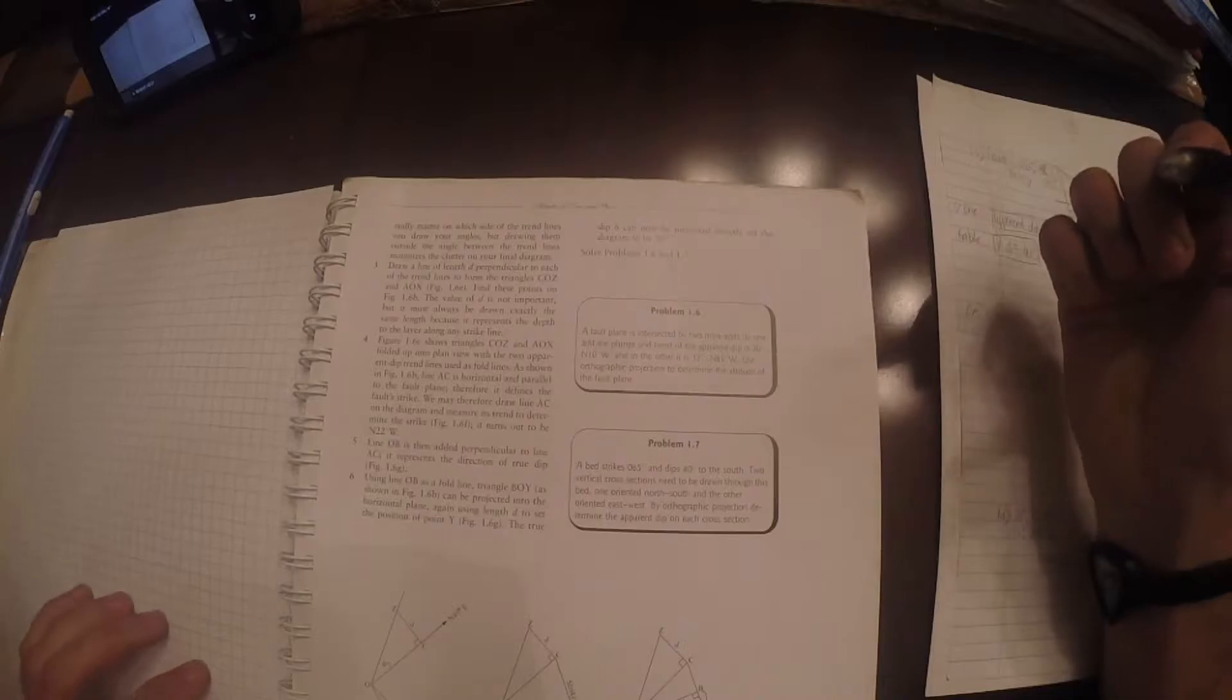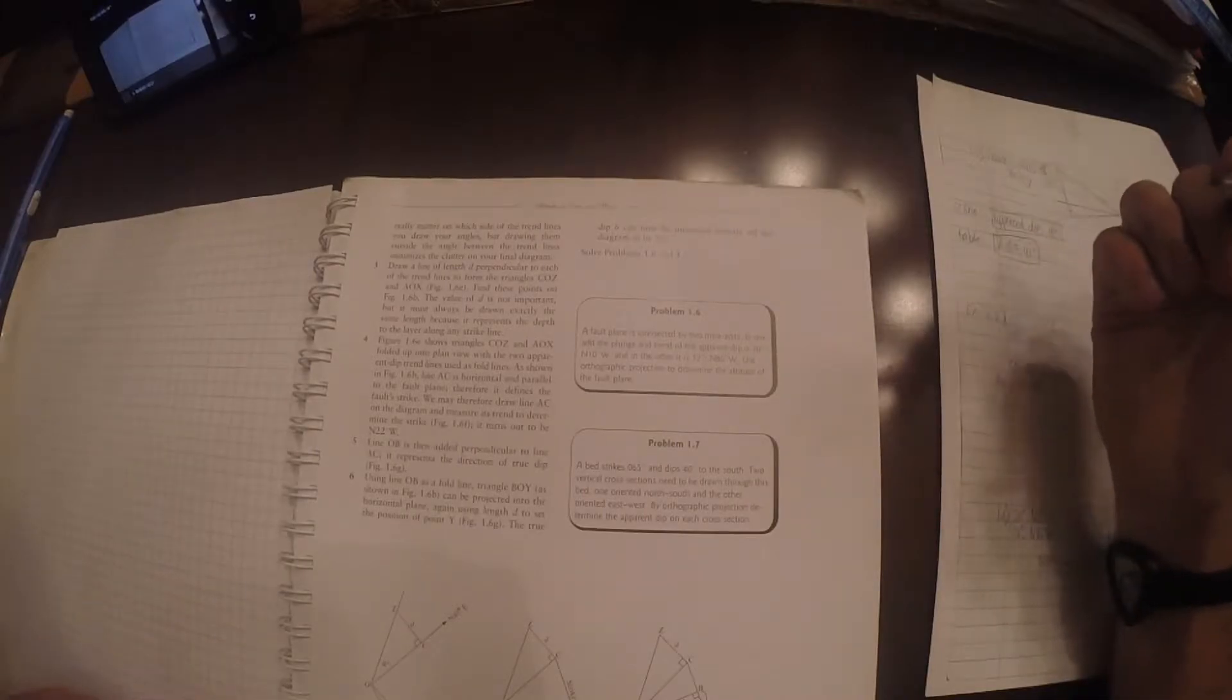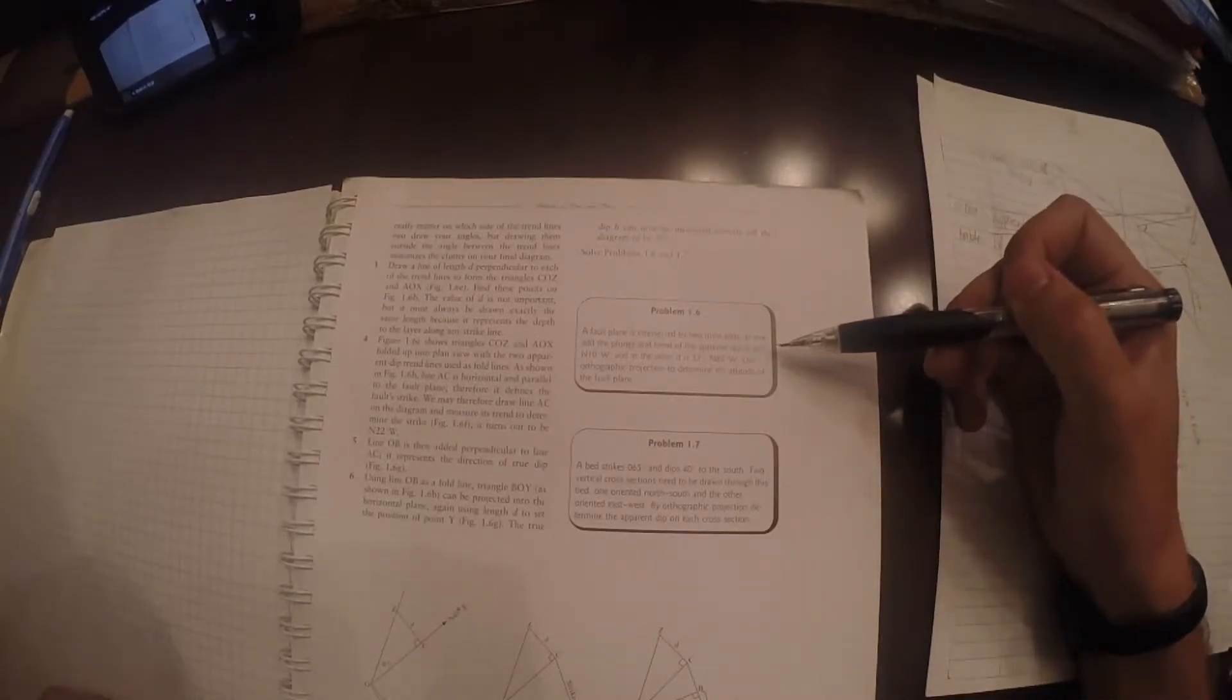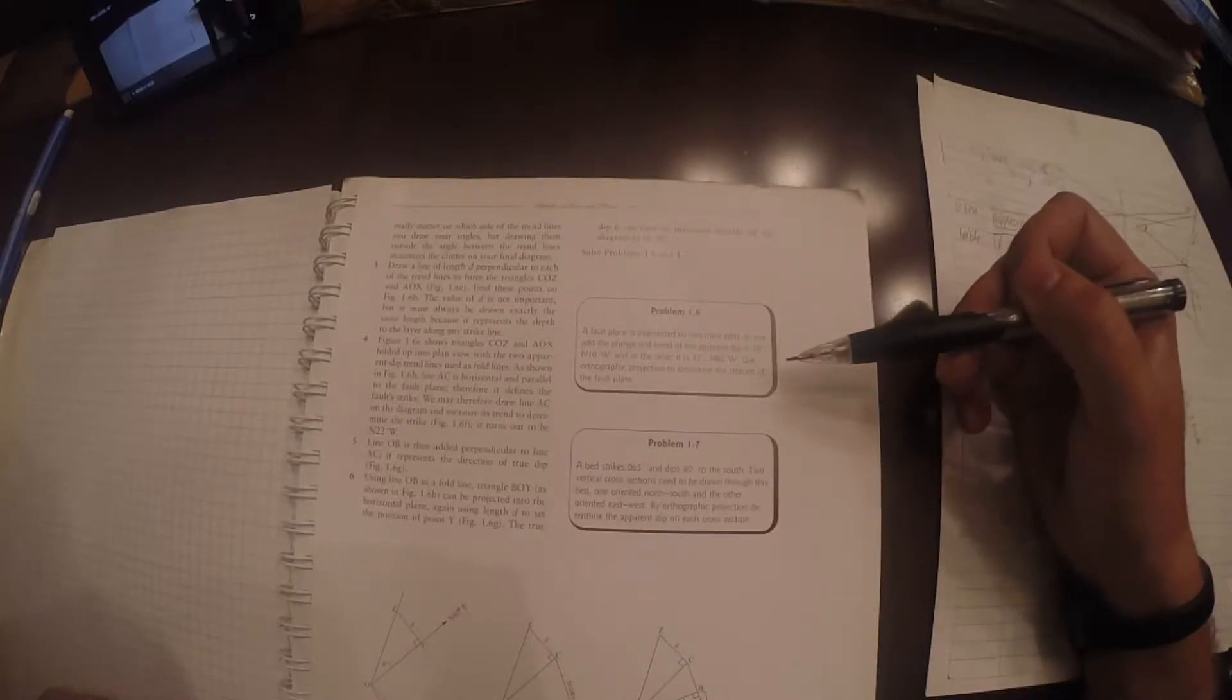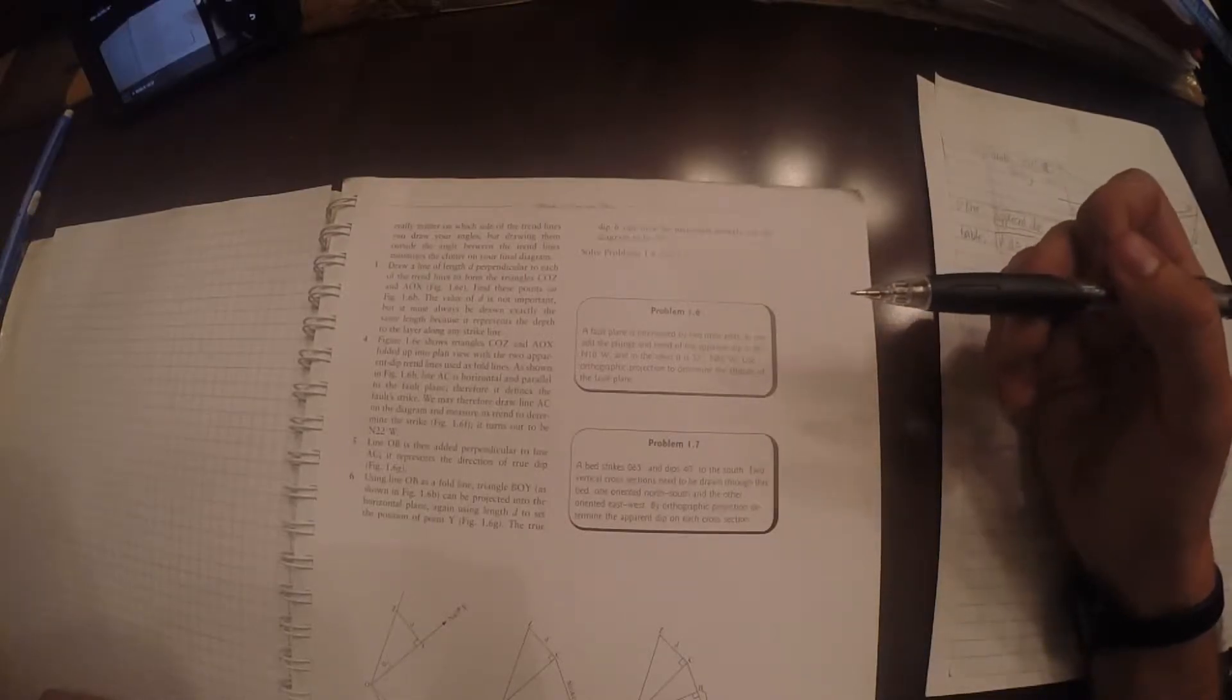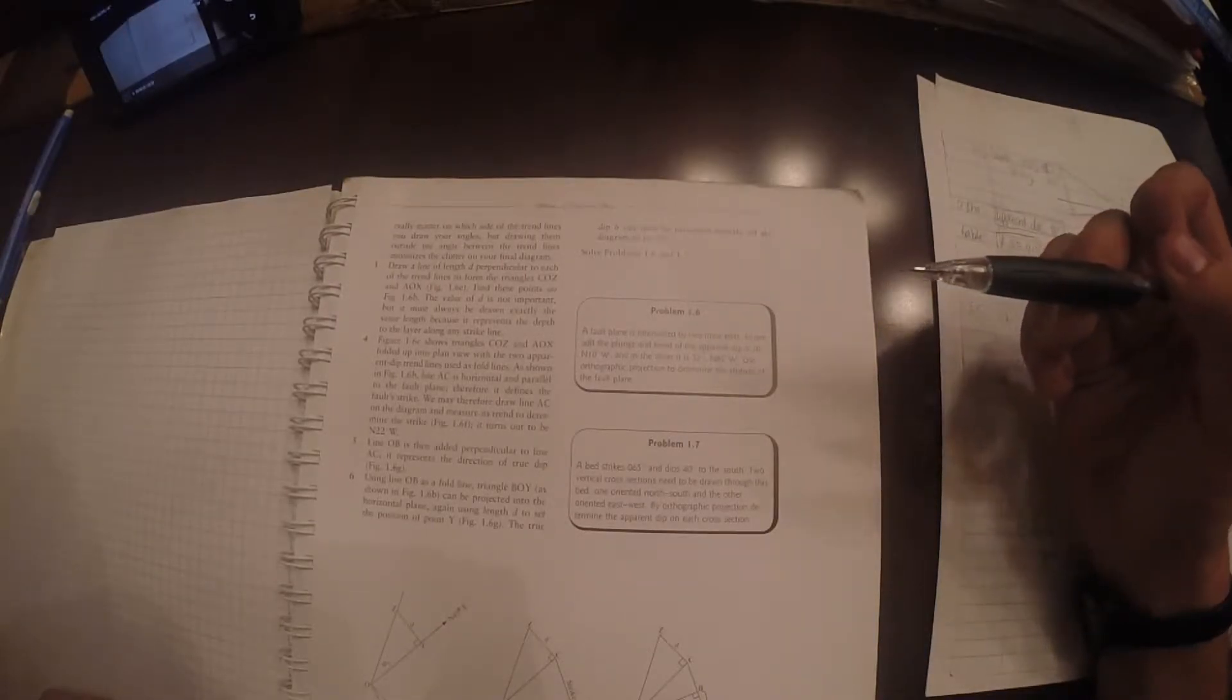Okay, question 1.6. A fault plane is intersected by two mine adits. In one adit, the plunge and trend of the apparent dip is 20 degrees north 10 degrees west, and in the other it is 32 degrees north 85 degrees west. Use orthographic projection to determine the attitude of the fault plane.